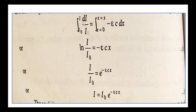Applying integration with limits from I₀ to I and from x = 0 to x, we get: I/I₀ = e^(−ε·c·x), or equivalently I = I₀·e^(−ε·c·x). This is the Beer-Lambert's Law mathematical expression.